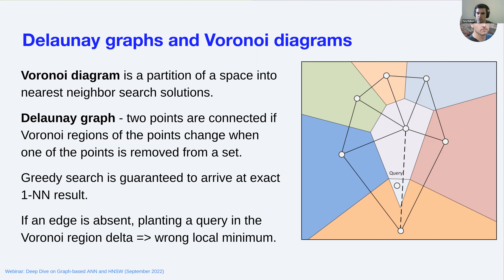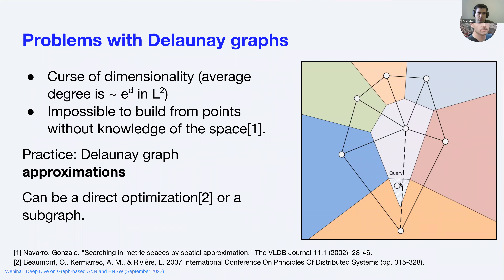This is both necessary and sufficient. If we remove an edge — depicted by a dashed line — the absorbed Voronoi region of the center point changes because we no longer see the element at the bottom, and the space of answers is extended. If we place a query inside this delta and try to search from the center element, it will get stuck, thinking it is the nearest neighbor. But the edge being present prevents that. This is a useful model, though not really used in practice.